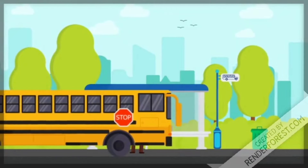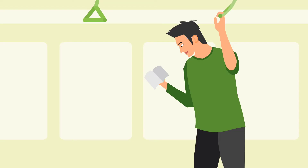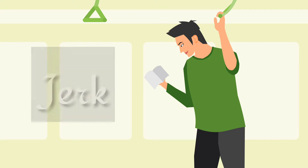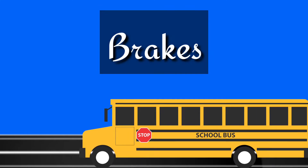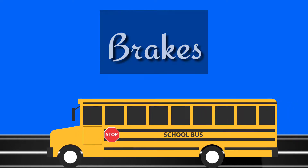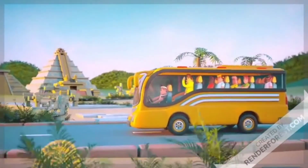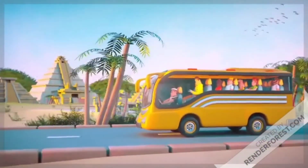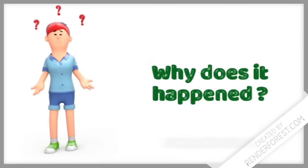Have you ever wondered when you sit in a bus and as soon as the bus starts, the upper part of your body feels a sudden jerk? Also, when the bus moves at a uniform velocity and the bus driver suddenly applies the brake, your upper part of the body feels the same jerk. A jerk is also felt when the bus takes a sharp turn — your body tends to move in a particular direction. Why is this happening? All this happens due to inertia.